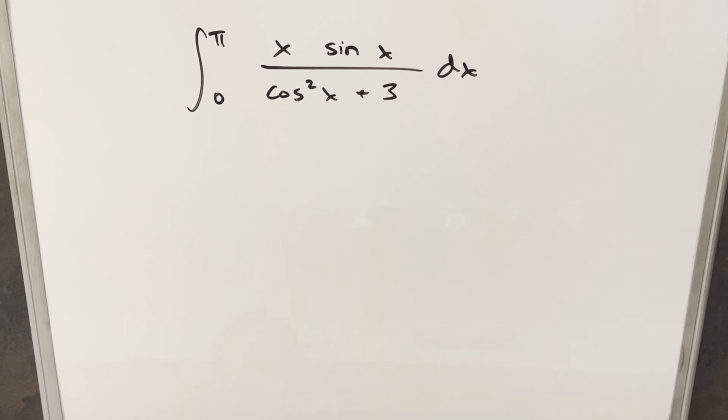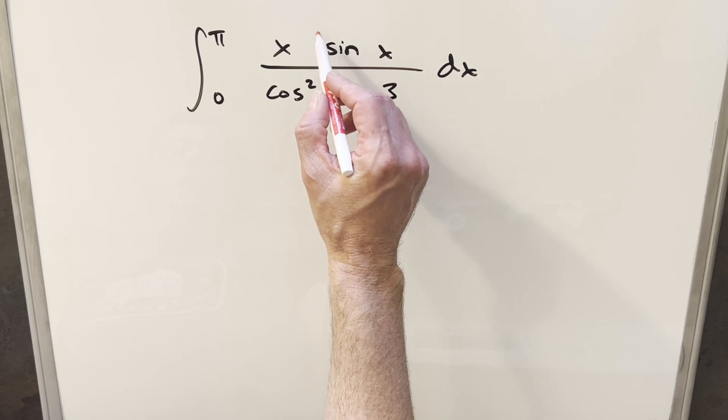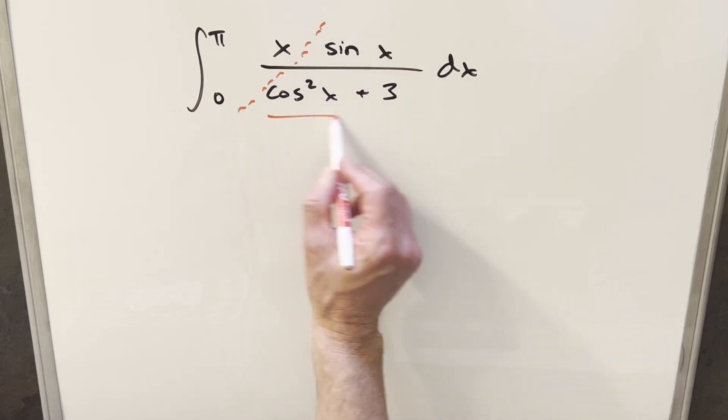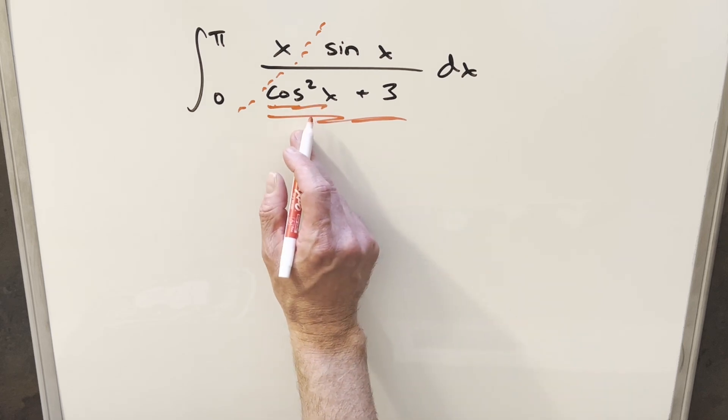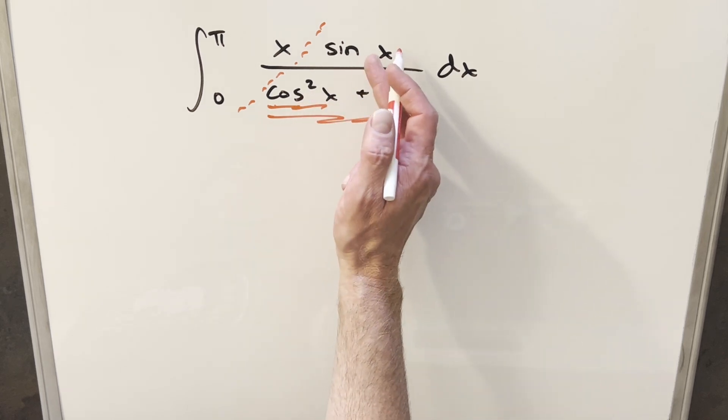Okay, the first thing I was thinking about here is if we could get rid of this x somehow, everything over here would be easy to integrate because we've got a good u-substitution set up right here, since the derivative of cosine is going to be minus sine x.